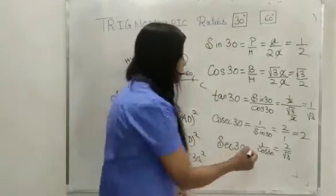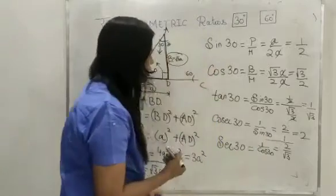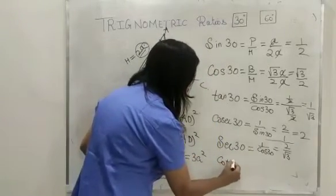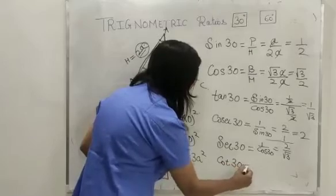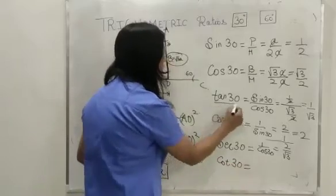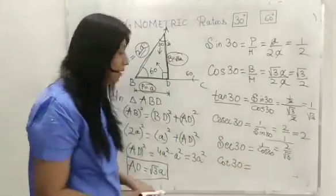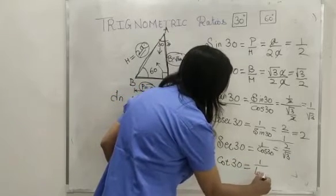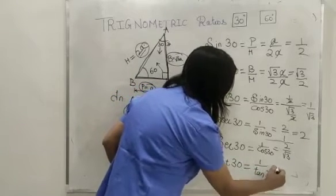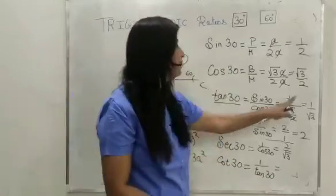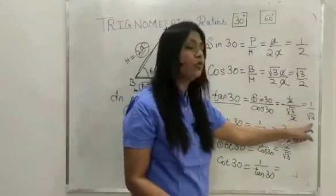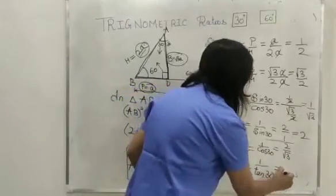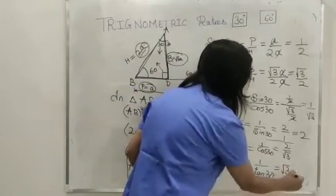And lastly, cot 30. Cot is just the reverse of tan 30. Since tan 30 is 1 upon root 3, its reverse will be root 3 upon 1, or simply root 3.